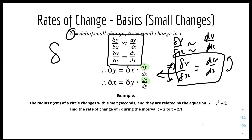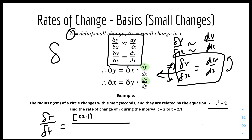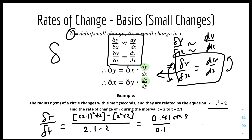Here we have an example. The radius R in cm of a circle changes with time T in seconds and they are related by R equals T squared plus 2. Find the rate of change of R during the interval T equals 2 and T equals 2.1. So delta R over delta T equals (2.1 squared plus 2) minus (2 squared plus 2), all over (2.1 minus 2), which gives 0.41 over 0.1, which equals 4.1 cm per second.